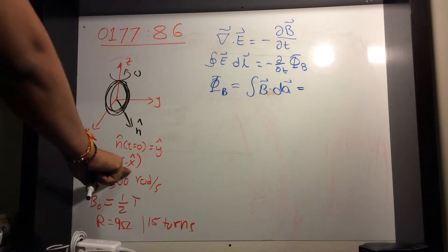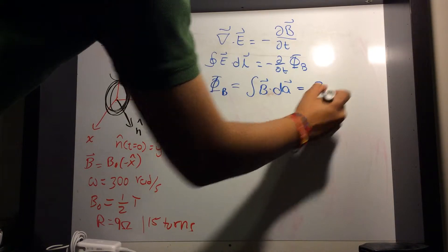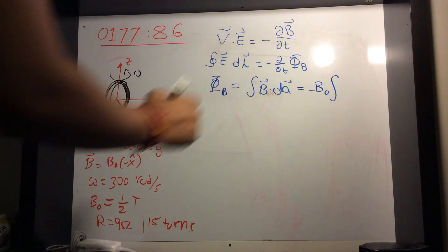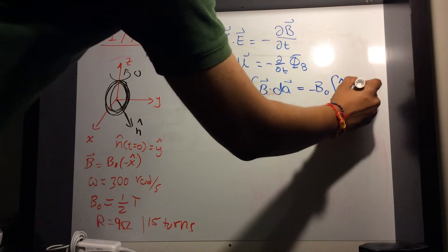So let's do this. Remember, B is B naught times minus y-hat. So I'll bring out minus B naught integral of the direction y-hat dot dA.